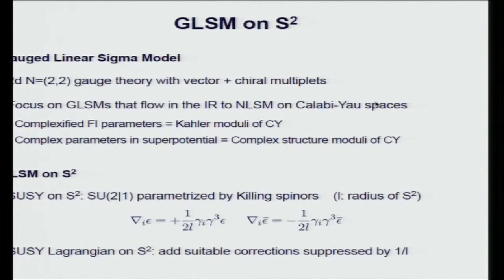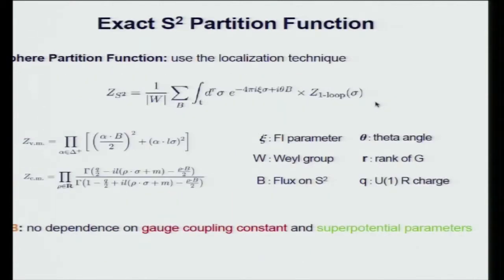Let's now put this theory on the two-sphere. The supersymmetry on the two-sphere is given by SU(2|1), parameterized by Killing spinors epsilon and epsilon-bar satisfying these two equations, where L is the radius of the two-sphere. By adding suitable correction terms suppressed by 1/L, we can write down the supersymmetric Lagrangian on the two-sphere. Using the localization technique, we can compute the exact two-sphere partition function, where W is the Weyl group of the gauge group and B is the quantized flux.